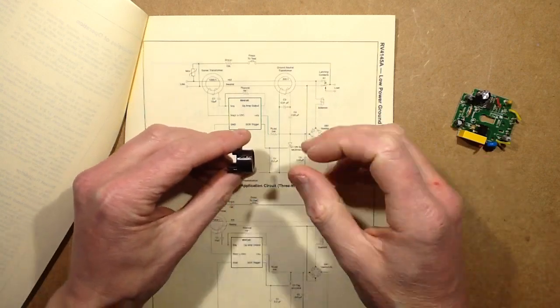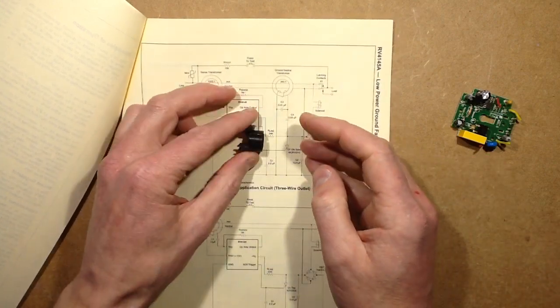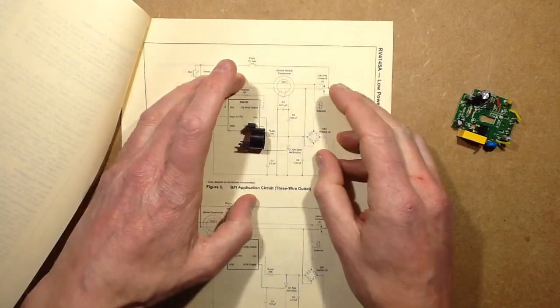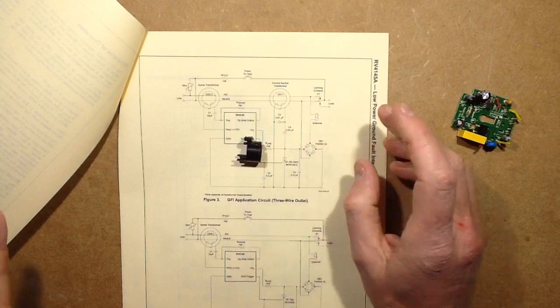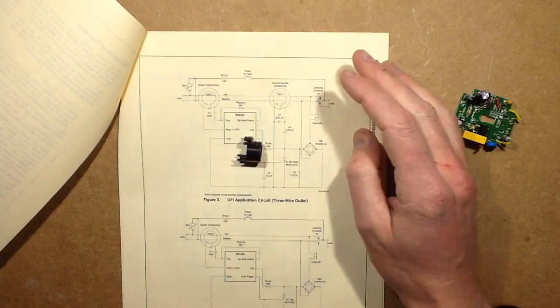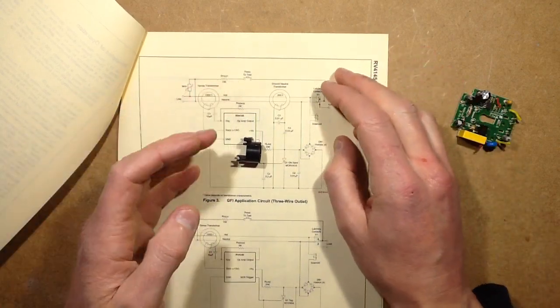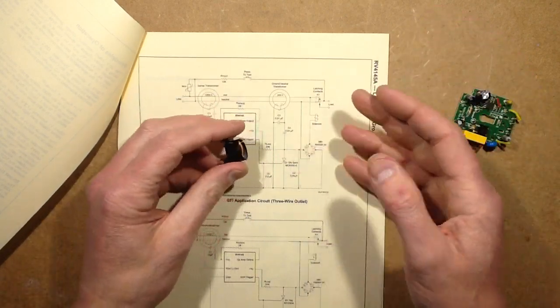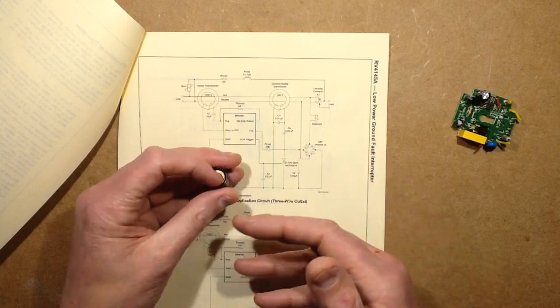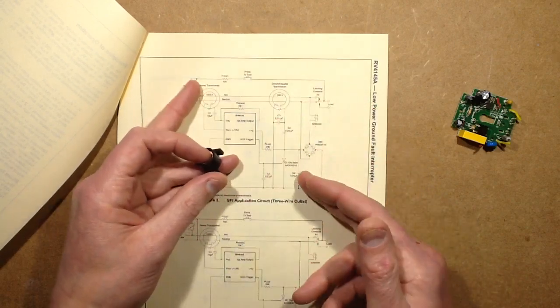In a normal installation, neutral and earth are connected, or the point they're going to be at the reference closest is at the transformer. That's where they are bonded together at transformer. Or sometimes they'll be bonded together where they come into the house because the earth is an alternative to neutral. It's a safety circuit to provide a return path for the live.